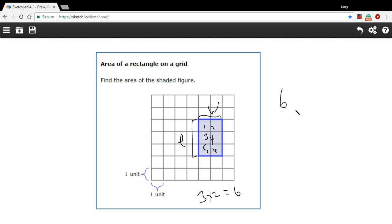The only trick with this answer is to make sure you get the units right. When you find area, you have square units or units squared. So our answer is going to be six square units.